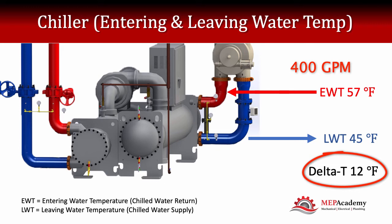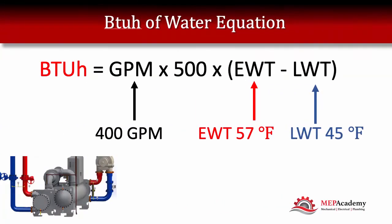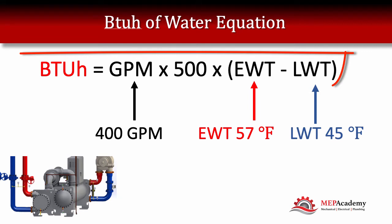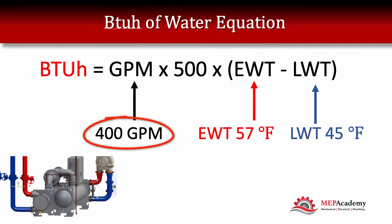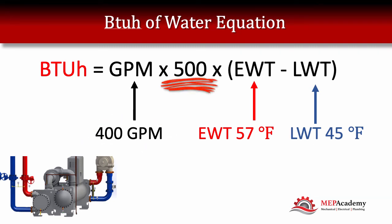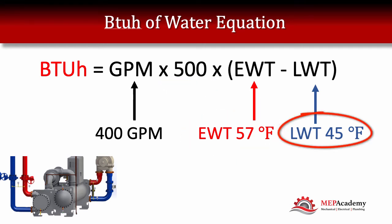With those values we can determine the tonnage of this chiller. The equation is BTUs per hour equal GPM times 500 times the Delta T. We measured 400 GPM, times 500, times the Delta T: entering water temperature was 57 degrees — chilled water return — minus 45 degrees chilled water supply, which gives us a Delta T of 12.